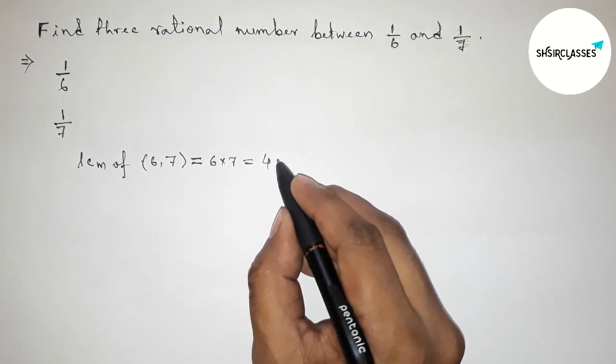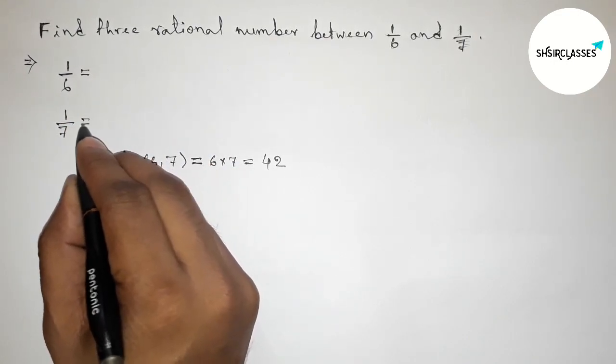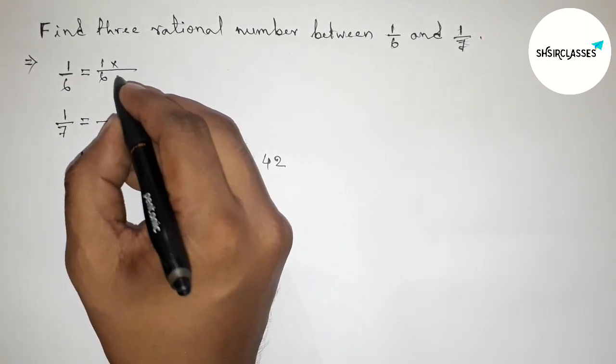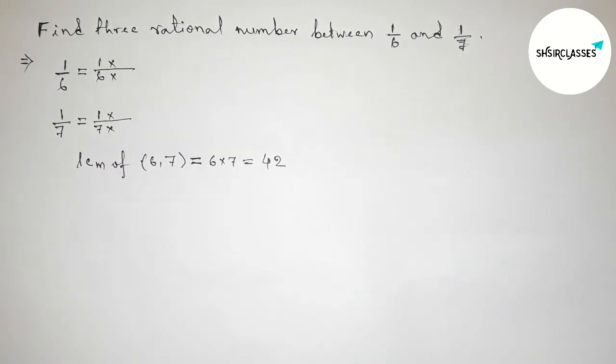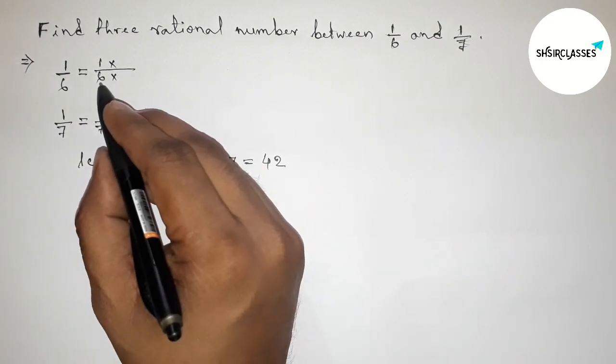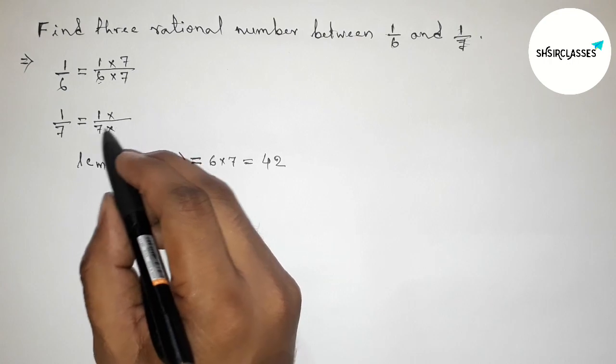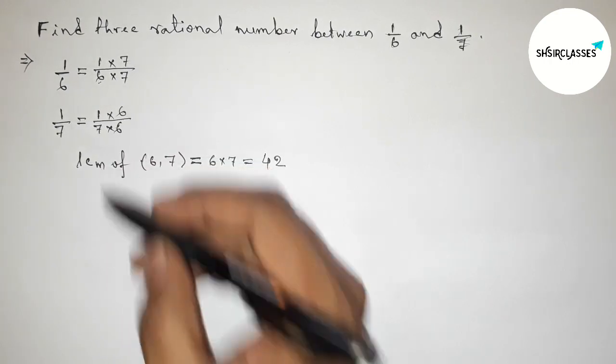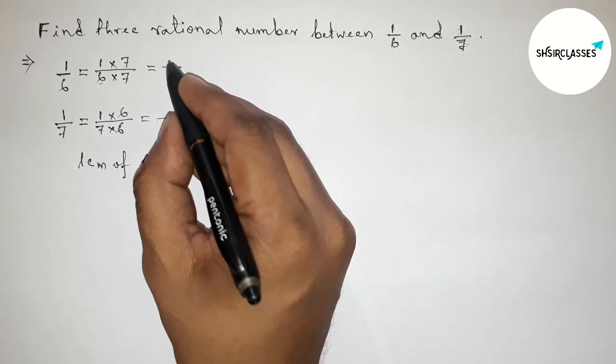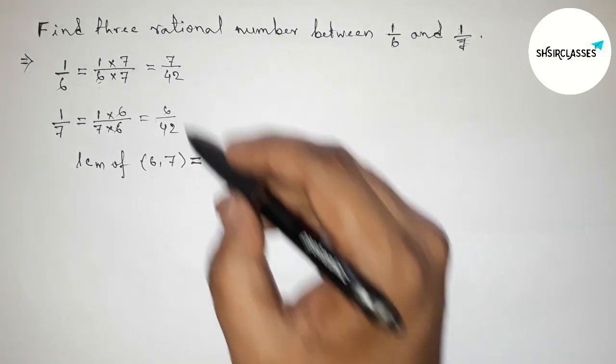Now doing some important calculations. First write down 1/6 like this and 1/7 like this. For 42, we have to take 6 sevens are 42, so taking 7 top and down. So now this equals 7/42 and here 6/42. So here both the denominators are equal to 42.